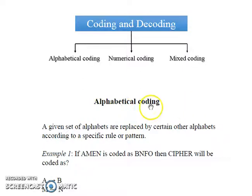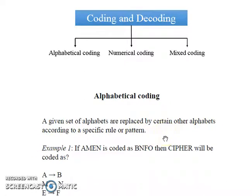In alphabetical coding, a given set of alphabets are replaced by certain other alphabets according to a specific rule or pattern. Let's see this with an example. Here, the word AMEN is coded as BNFO. We need to find how the word CIPHER will be coded.